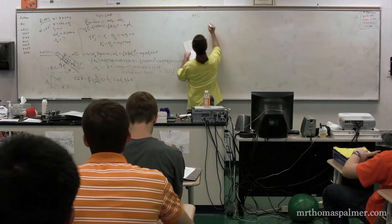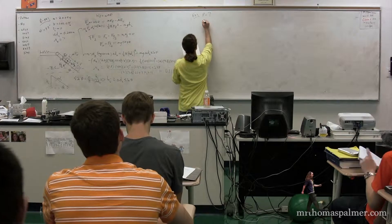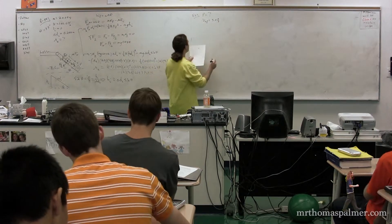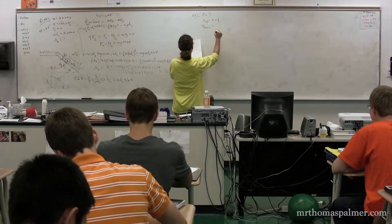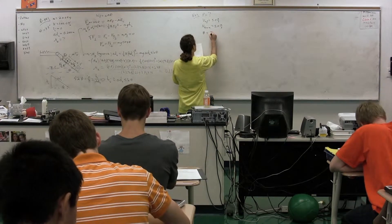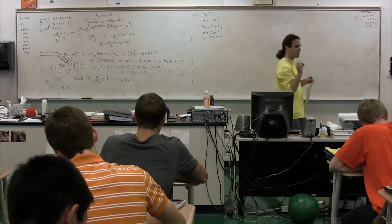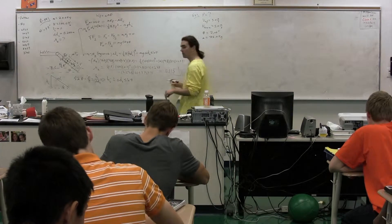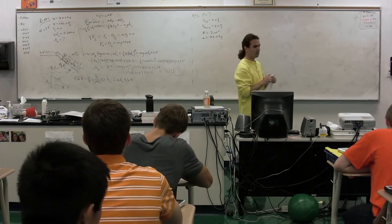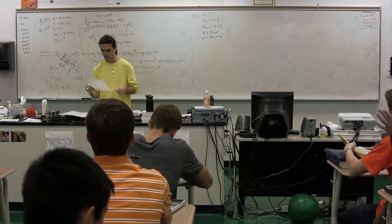The question is: what power must a bicyclist apply to a bike to cause a constant velocity uphill, where the velocity uphill equals 5.0 meters per second, if the bicyclist can coast down the same hill at the same constant speed of 5.0 meters per second? The angle of the incline is 7.00 degrees and the mass of the rider is 75.0 kilograms.